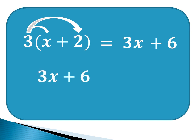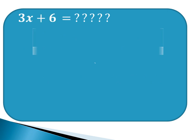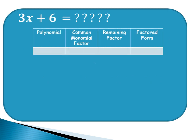Let us reverse the process. The given this time is 3x plus 6. We already know the factors: 3 times the quantity x plus 2. But how can we get it? For us to know, let us make a table containing: polynomial, common monomial factor, remaining factor, and factored form. The first thing to do is to write the given polynomial, 3x plus 6.